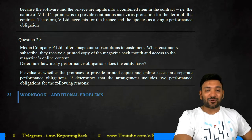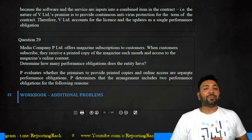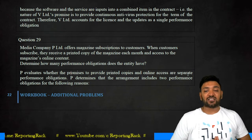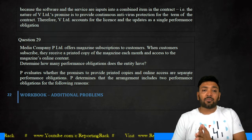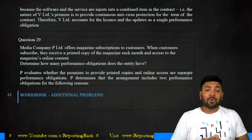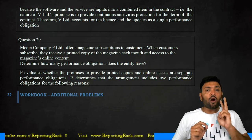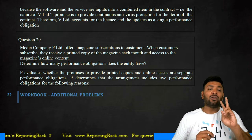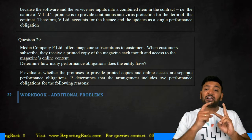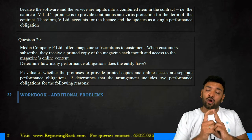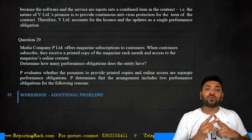Continuing with question number 29 under Ind AS 115: a media company, P Limited, offers magazine subscriptions. When customers subscribe, they receive a printed copy each month and access to the magazine's online content. There are two obligations in this contract — one is to provide a printed copy, and the other is to give access to the magazine's online content. Both are distinct from each other.